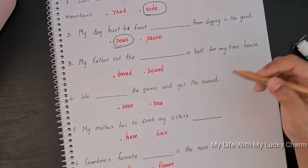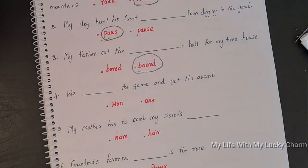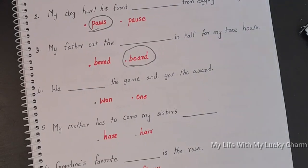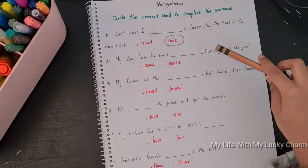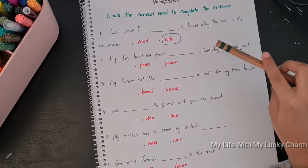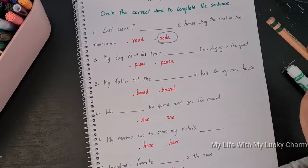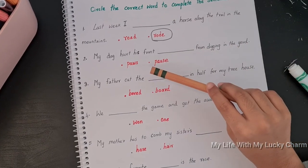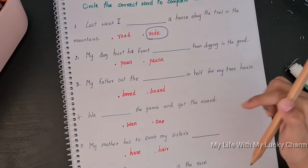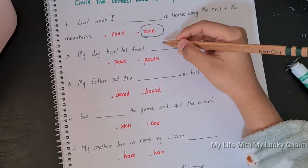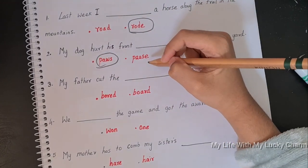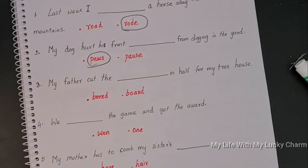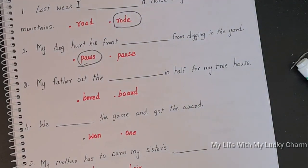So I thought, why not include this activity too to make him understand that the word can have the same pronunciation, but based on the context, the meaning will change. And my dog hurt his friend from digging in the yard. Paw. This, because it means passing the TV. I'm going to pass the TV like that.